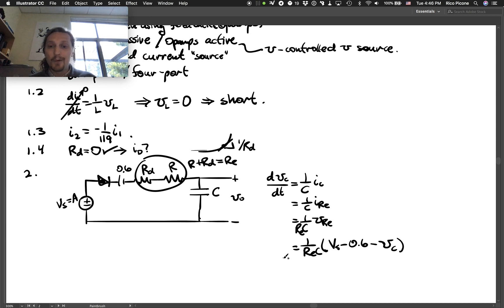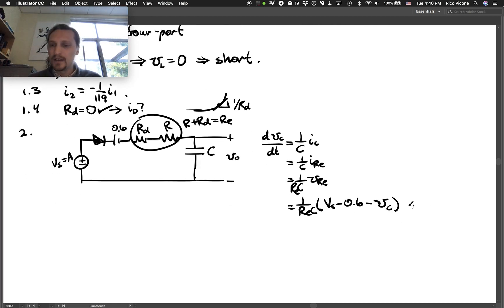And now we've got a differential equation in VC. So if you rearrange this into our typical first-order linear ODE form, we've got tau times dVC/dt plus VC equals 1 over RE times C times (VS minus 0.6), where we've defined tau to be 1 over REC.